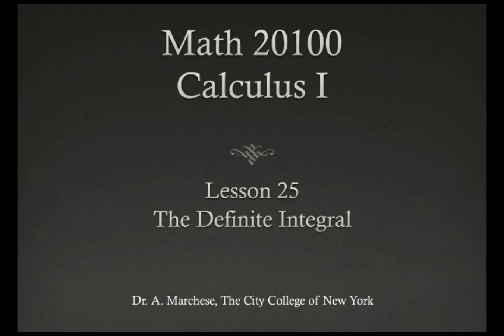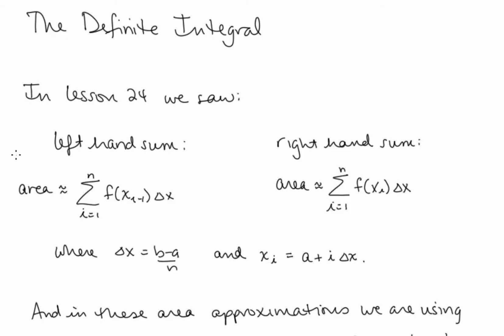This is lesson 25 in our Calculus 1 series, the Definite Integral. In the last lesson, we saw the left-hand sum and the right-hand sum as ways to approximate area under a curve.